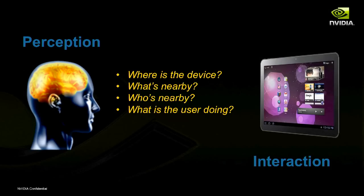In mobile devices, the exciting area is how the mobile experience is going to change with computer vision — you're going to have devices that become aware. GPS, accelerometers, and sensors tell you a little about where you're at, but as vision gets more sophisticated, the device is going to be able to know what's around it and, probably more interestingly, monitor the user. Almost all tablets have a user-facing camera now, so they can see who is using the device, where they're looking, maybe what their hands are doing — endless possibilities right now.